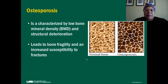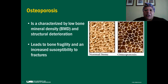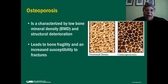As you can see from the picture on the right, normal bone is nice, tight, and dense with a nice interwoven connection in the inner portion of the bone. Osteoporotic bone is thin, and the inner portion of the bone is not as connected, and this honeycomb pattern shows why it could lead to bone fragility and increased susceptibility to fractures.